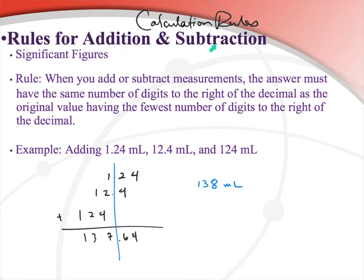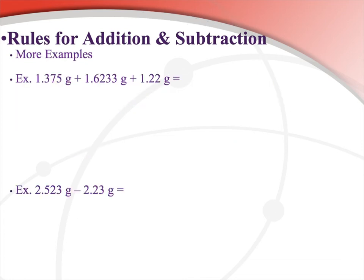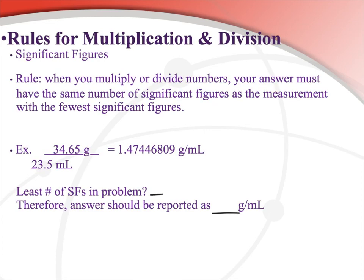This rule is only for addition and subtraction. Whatever you're doing — addition or subtraction — line them up vertically, and whichever one goes the least far to the right is as far to the right as you can go in your answer. Don't get this confused with the multiplication and division rule, which is coming up next — there are two separate rules. Try the two practice examples on your own, and remember to line them up vertically.